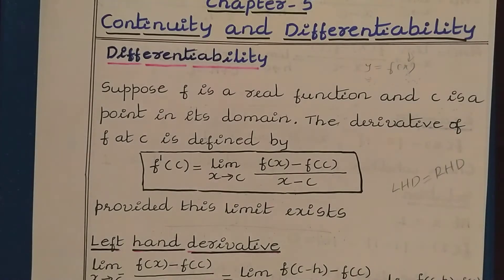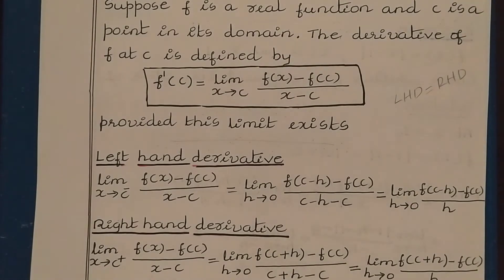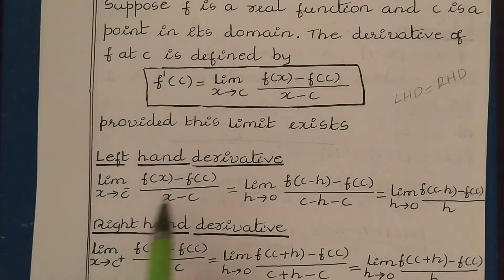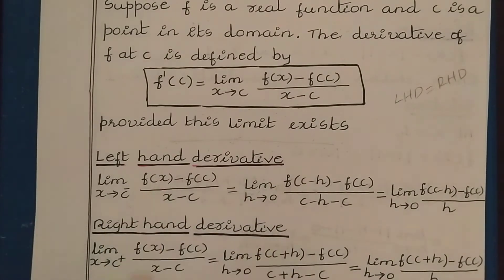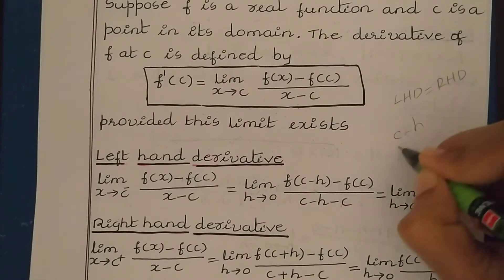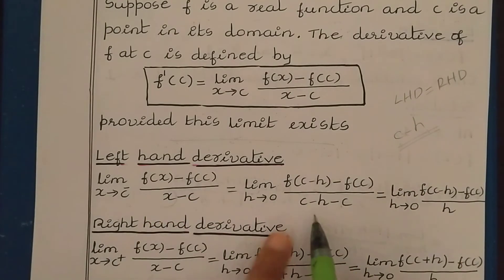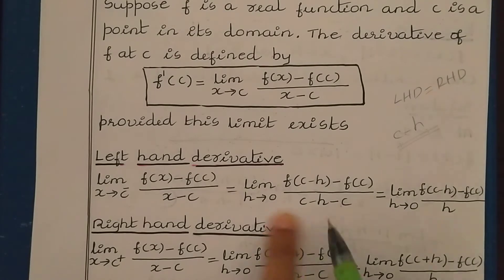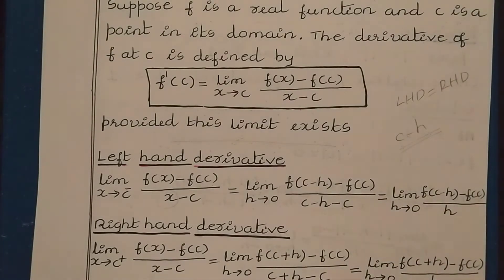Let us see what is the left-hand derivative. The left-hand derivative is: limit x tends to c minus, f(x) minus f(c) divided by x minus c. While applying the limit, wherever you have x, you need to replace it with c minus h. Then we get: limit h tends to 0, f(c minus h) minus f(c) divided by minus h. So this is the left-hand derivative.